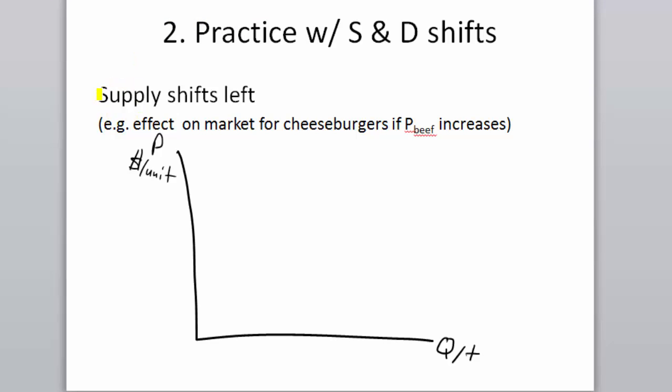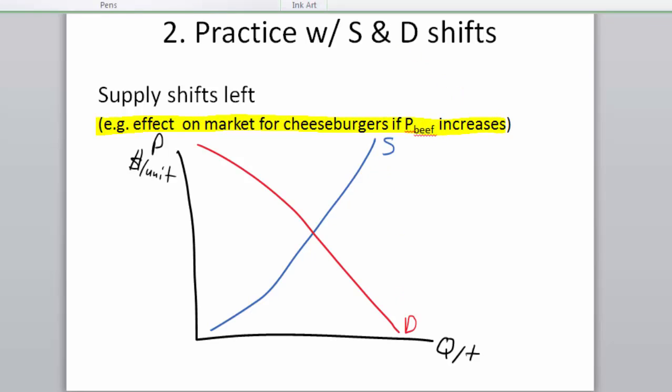First off, we want to look at a situation where supply shifts left. I've provided an example scenario here. What's the effect on the market for cheeseburgers if the price of beef increases? So there's supply and demand and we can pencil in our initial equilibrium at price P1, quantity Q1.